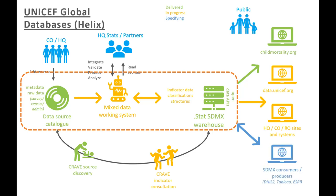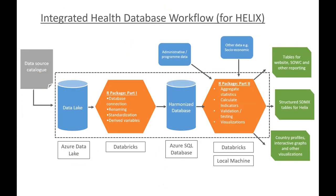Going into the mixed data working system: this shows how data get called out of our source catalog into an Azure data lake. We run an R package that standardizes and harmonizes the data across all of the tens of thousands of surveys. That harmonized, standardized raw dataset is maintained in a harmonized database, also in Azure SQL. Then we have another R script that can aggregate, calculate, validate, test, and visualize those indicator data and push them out to various interfaces including the .stat warehouse. All of this is referred to simply as Helix, which is the name of our architecture.